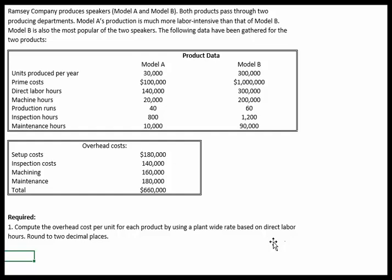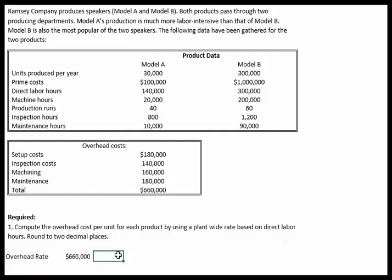First, we have to establish what the overhead rate is. The overhead rate is a function of the entire overhead, which we're told in this problem is $660,000 — those are all the overhead costs listed here. We need some way to split those costs up, and they tell us to do that based on direct labor hours. Digging through the data, we have prime costs, how many we make a year, and direct labor hours. Between the two models, we have 440,000 hours consumed total.